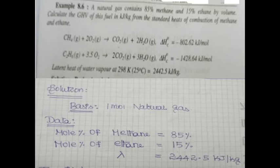Latent heat of water vapor at 298 K: λ = 2442.5 kJ/kg. The objective of this problem is to determine the GHV of this fuel in kJ/kg from the standard heat of combustion of methane and ethane.